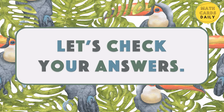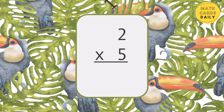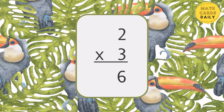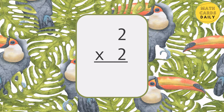Let's check your answers. 2 x 5 is equal to 10. 2 x 3 is equal to 6. 2 x 8 is equal to 16. 2 x 2 is equal to 4.